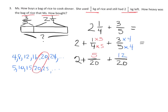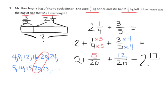So now — and students might be a little bit confused: which is bigger, 1 fourth or 5 20ths? Students might think 5 20ths is bigger than 1 fourth. As the teacher or parent, you have to remind students that 1 fourth and 5 20ths are the exact same amount — they're equivalent fractions because we multiplied the numerator and denominator by the same number; essentially we're multiplying by 1. We can now add, and you end up with 2 and 17 20ths kilograms — that is how heavy the bag of rice was that Ms. Howe bought.